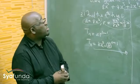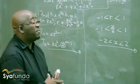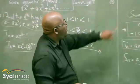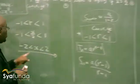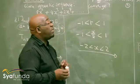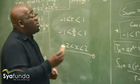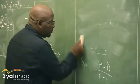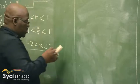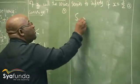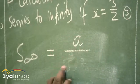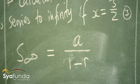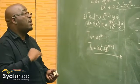Let's look at the next question: calculate the sum of the series to infinity — sum to infinity. You go straight to your formula. The sum to infinity, in this case, we are now given the value of x. We are not only predicting it; we are given the actual value of x. The sum to infinity formula is a over 1 minus r. This is the formula to find the sum to infinity — it is there on your formula sheet. Sum to infinity equals the first term divided by 1 minus r.